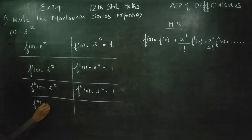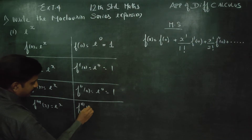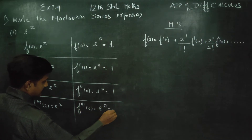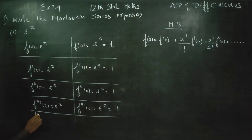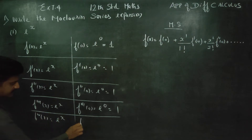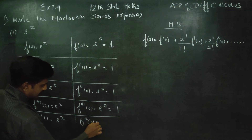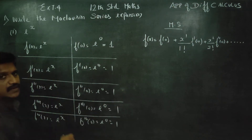F triple dash x is again e power x. F triple dash 0 is equal to e power 0 — again the answer is 1. Again f4 of x is equal to e power x. F4 of 0 is again e power 0, which is 1. It goes on and on.